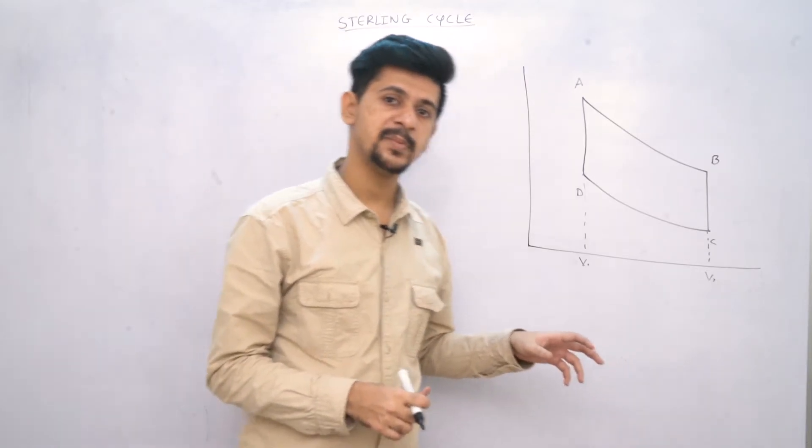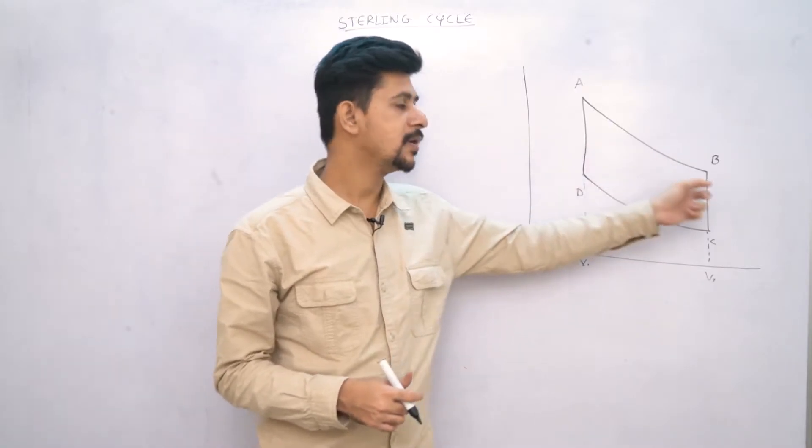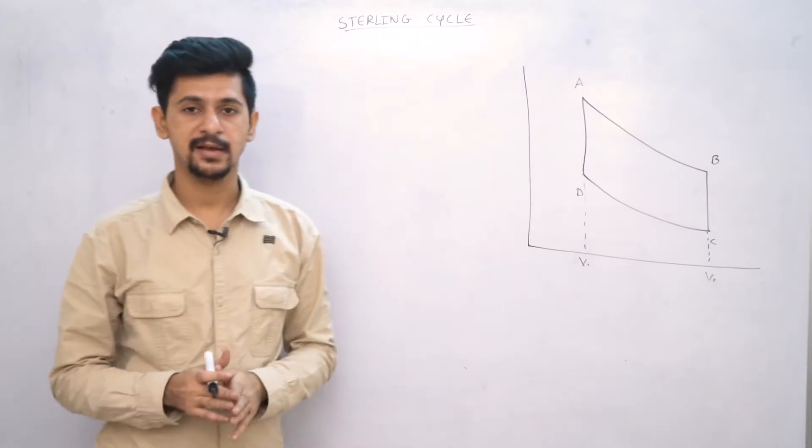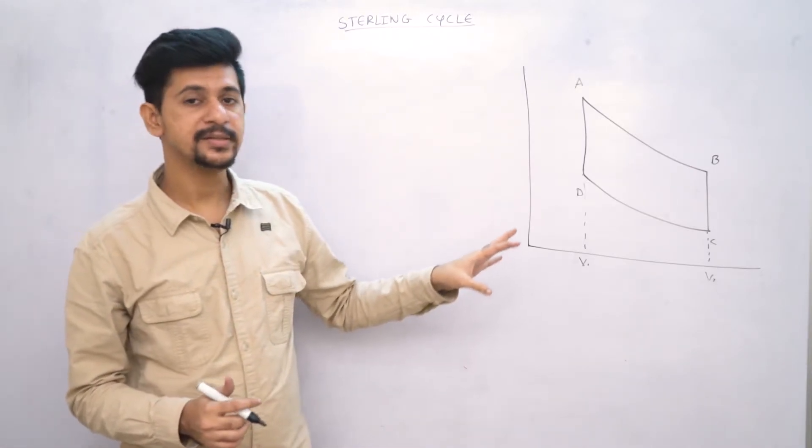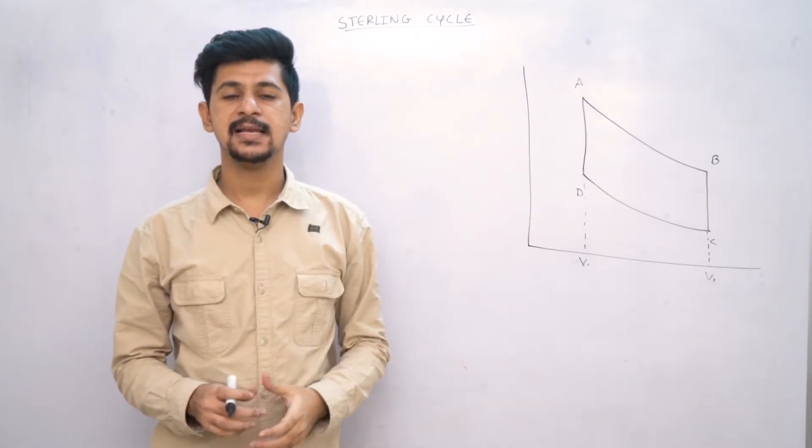So basically there will be two things, two processes. Two are going to be isothermal, and two are going to be isochoric, where volume will be constant. So if you look at these four: A to B, B to C, C to D, and D to A, let's see exactly what happens.